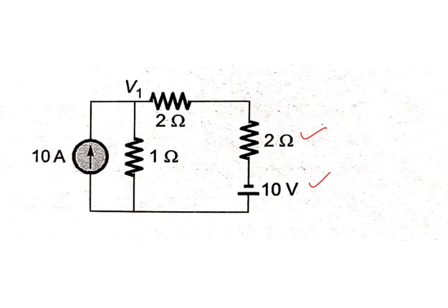Now you can see the circuit has been simplified with only a single node appearing here. This is not a node because it does not have more than 2 branches interconnected — only when more than 2 branches interconnect can we call it a node. And this is the ground.